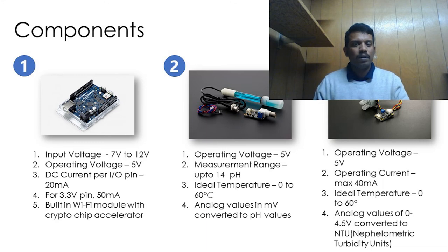The third component is the turbidity sensor, which is an analog sensor. Its operating current is 40mA and its analog values can be measured up to 4.5V, starting 0V to 4.5V, which is then converted into the NTU unit, also known as the nephelometric turbidity unit. The operating voltage is 5V and it can withstand an ideal temperature between 0 and 60 degrees Celsius.